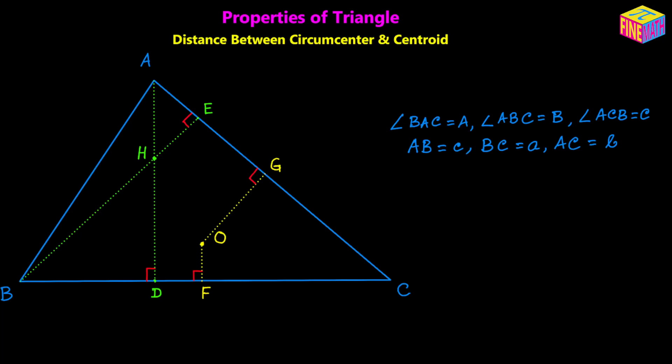Next I am going to draw a couple of medians to find the centroid of this triangle. Here we have the centroid, denoted by uppercase G. So we have been able to locate the orthocenter, the centroid, and the circumcenter of this triangle.